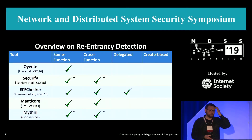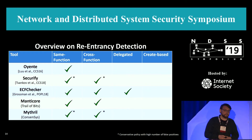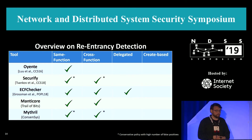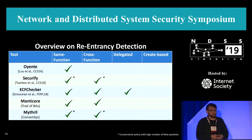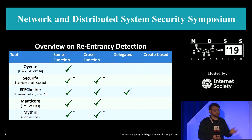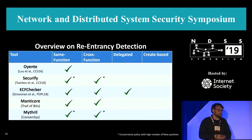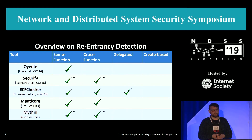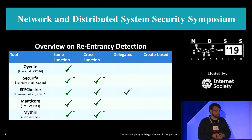Here's a quick overview of analysis tools that detect re-entrancy issues: Oyente, Securify, ECF Checker, which are academic projects, and also Manticore and Mythril, which are industry tools. Same-function re-entrancy is detected by almost everyone. For cross-function re-entrancy it's not that bad. But if we take a look at delegated and create-based re-entrancy, where you have to analyze more than one contract, especially static analysis tools have a hard time dealing with that.